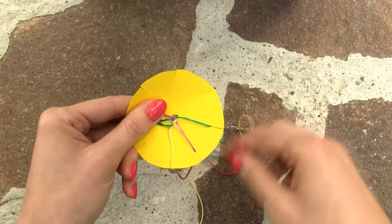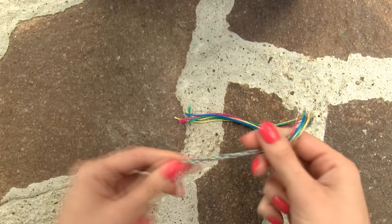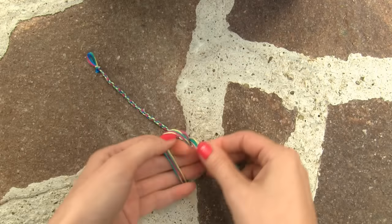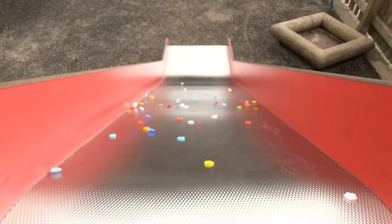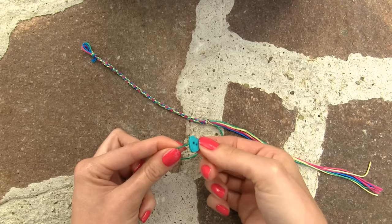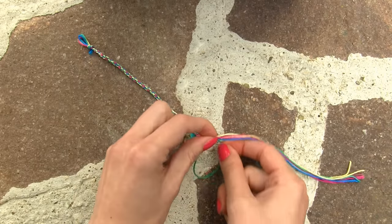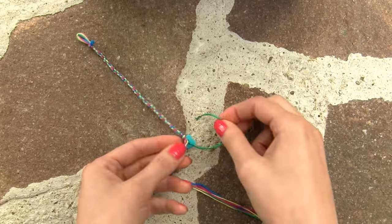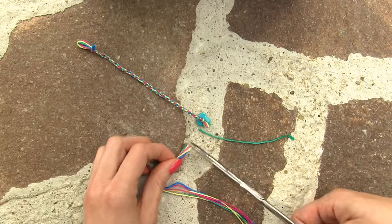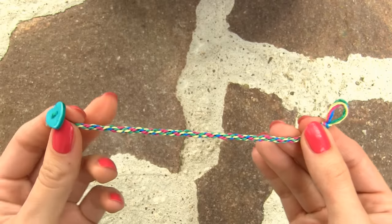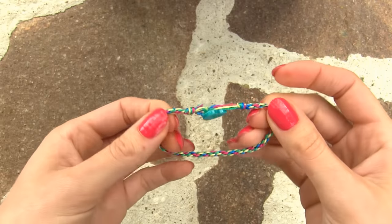When the bracelet is long enough release all the strings from the cuts and take it off the loom. Make a little knot to secure your work like this. For the button closure choose one thread, I like to go for the color that matches my button and thread the button on. Slide the button as close to the bracelet knot as you can and make a few small knots to secure it in place. Trim the excess thread away and you are all done with this beautiful bracelet. It only takes about 20 minutes to complete one, which is just awesome.